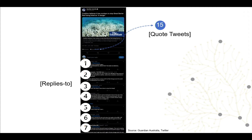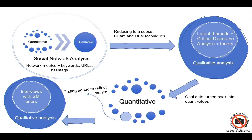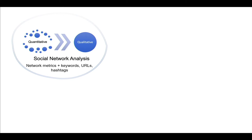To tie this all together, this is a visualisation of the integrated mixed methods approach I have conceptualised. Going step by step so it looks less overwhelming: social network analysis itself is inherently mixed. It uses metrics expressed as numeric values to give insight into connection and disconnection, but it can also detect frequencies of keywords, URLs and hashtags — and of course these all require interpretation.